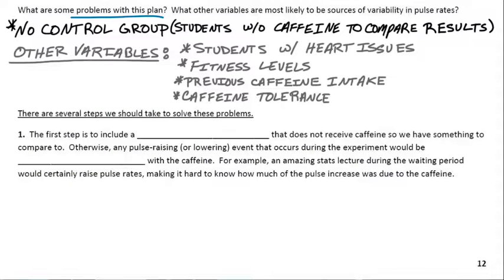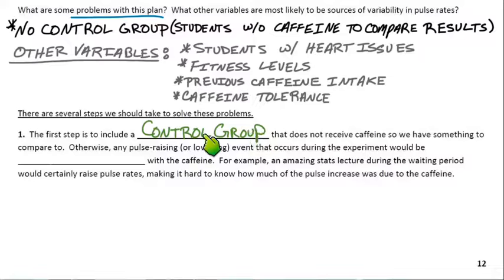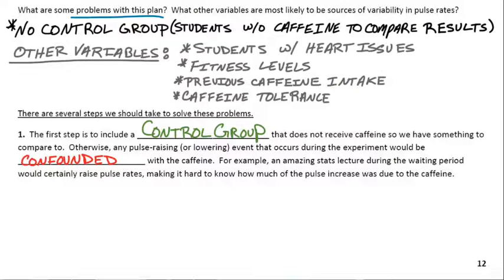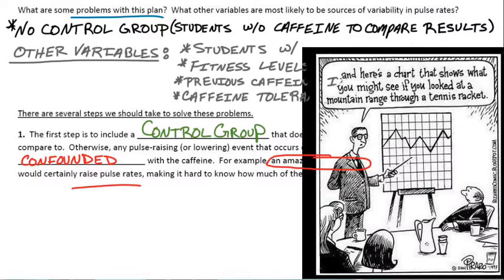There are several steps we should take to solve these problems. First, include a control group — a group that doesn't receive caffeine — so we have something to compare the caffeine group to. Half the students get caffeine, half don't. Otherwise, any changes in pulse rate would be confounded with the caffeine. Perhaps the biggest confounding factor: an exciting stats lecture could raise your heart rate right before the study, and you couldn't tell if it was due to the caffeine or the lecture.